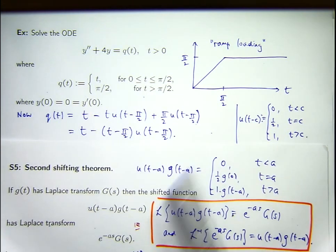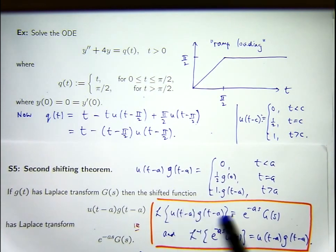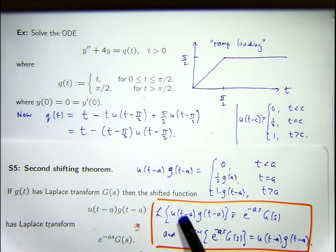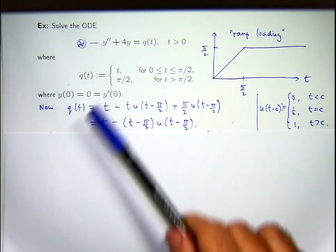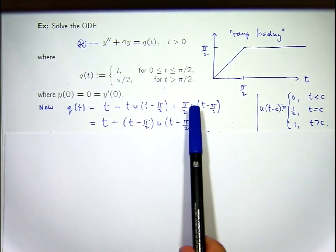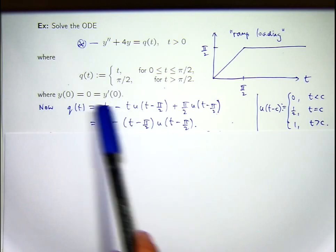The second shifting theorem says that the product of these two functions gives an exponential times big G of S, where big G of S is the transform of little g of T. In this context, A would be pi on 2. So let's start the process and take the transform of both sides of our ODE — we've spent time writing this in the correct form.